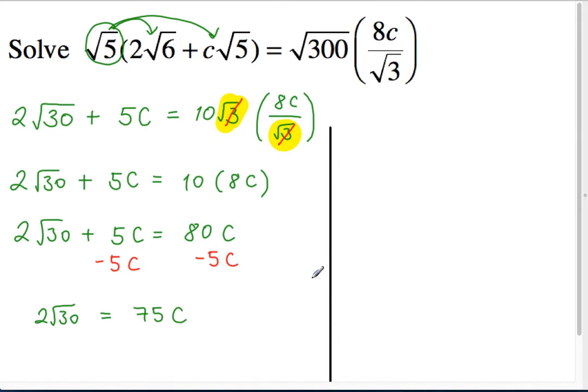So 2 root 30 is equal to 75c. Okay. And it looks a bit messy, a surd equaling a number, a natural number times c, but we just follow our inverse operations, trying to isolate c. And next we will divide both sides by 75.